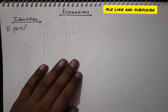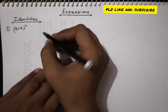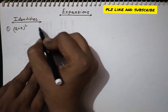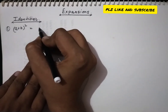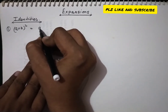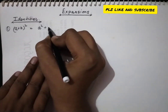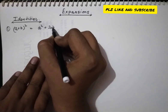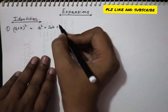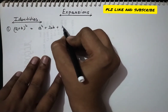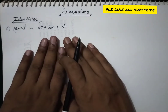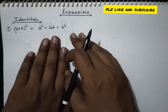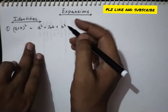The very first identity is (a + b) whole square, and that equals a squared plus 2ab plus b squared. We can verify where this identity comes from.